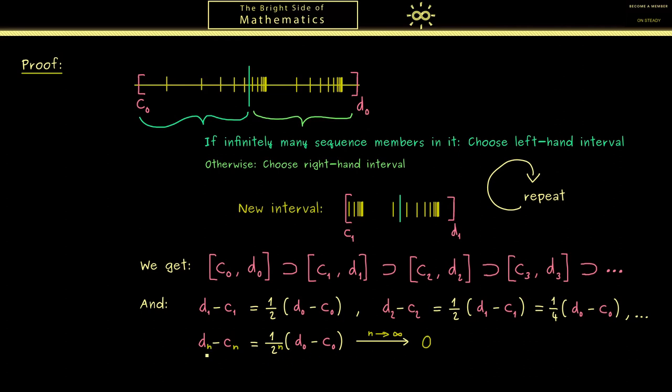However, we also get some information about the sequences dn and cn when we look at the picture again. First of all, we know they are bounded sequences because all the sequence members also lie in this interval. And secondly, we know the sequence cn can only increase where the sequence dn can only decrease.